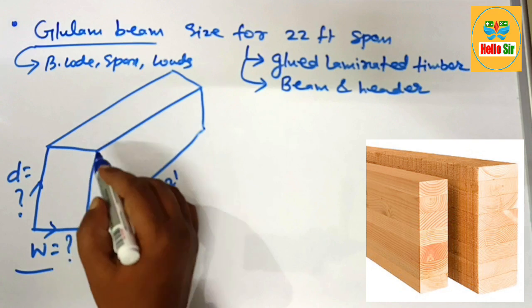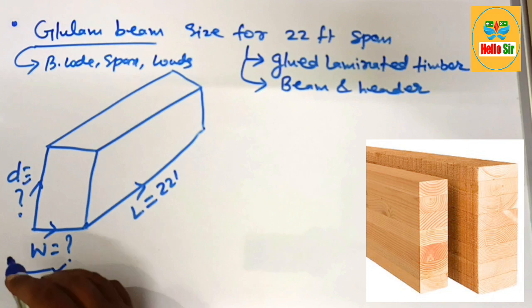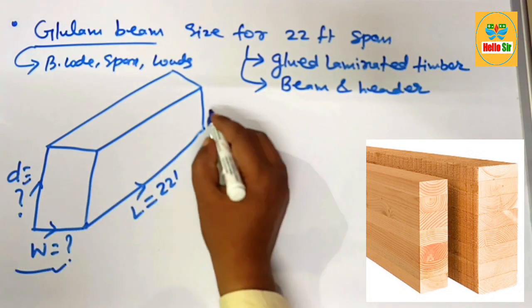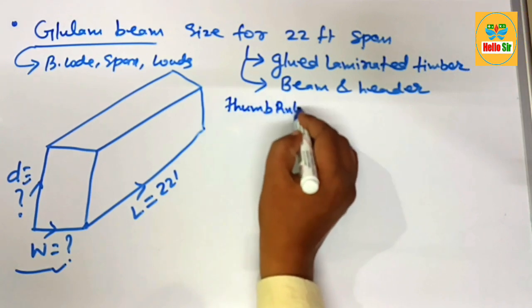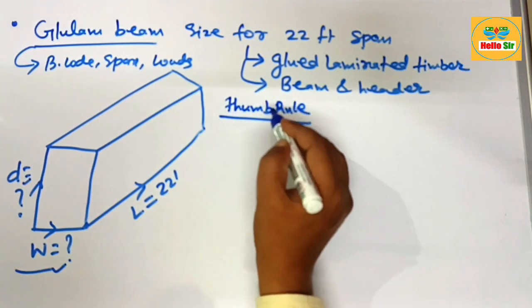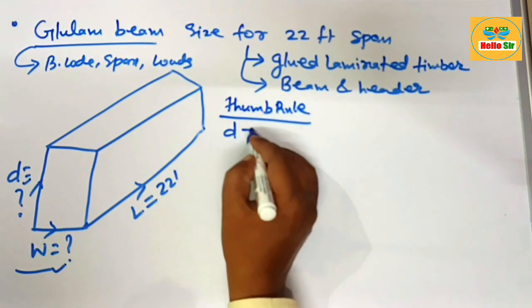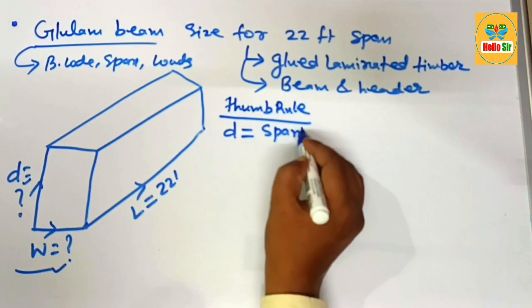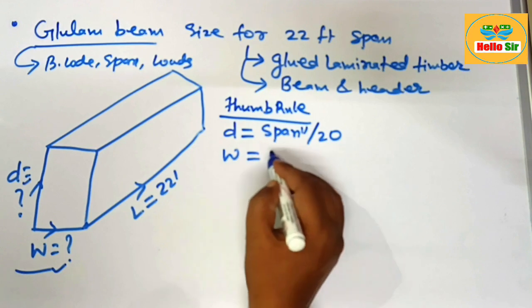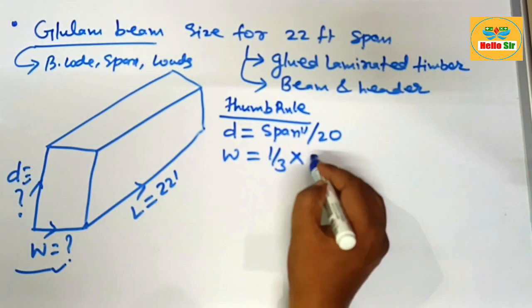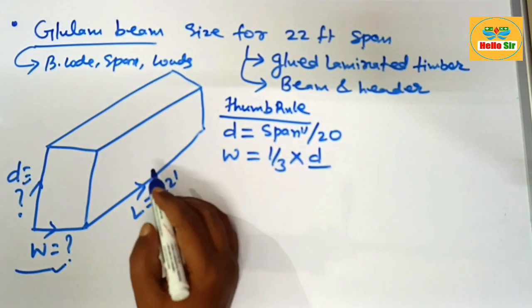The sizing of glulam beam means you have to decide the depth and width of the beam. Here we calculate according to thumb rule. As per thumb rule, the depth section of beam: divide your span in inches by 20, and width section of the beam is one third of depth section of the beam.